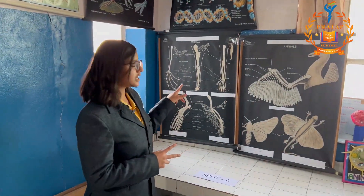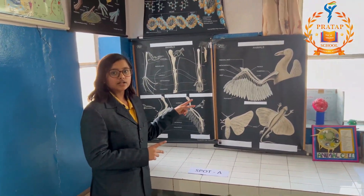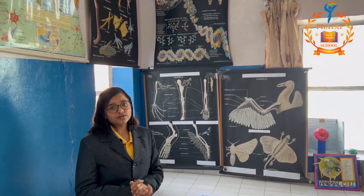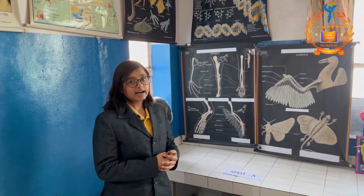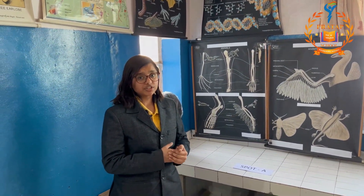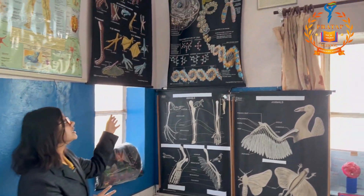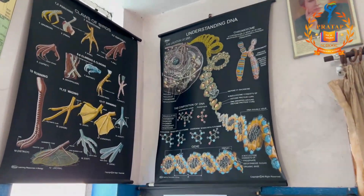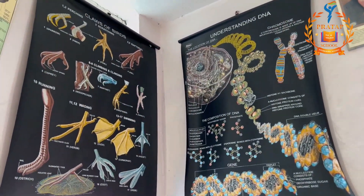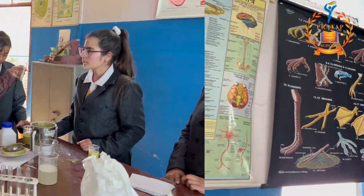Next up, we have these two charts showing homologous and analogous organs for better understanding of concepts like convergent and divergent evolution. This is the chart showing the chemical structure of DNA with different nitrogenous bases and base pairings.